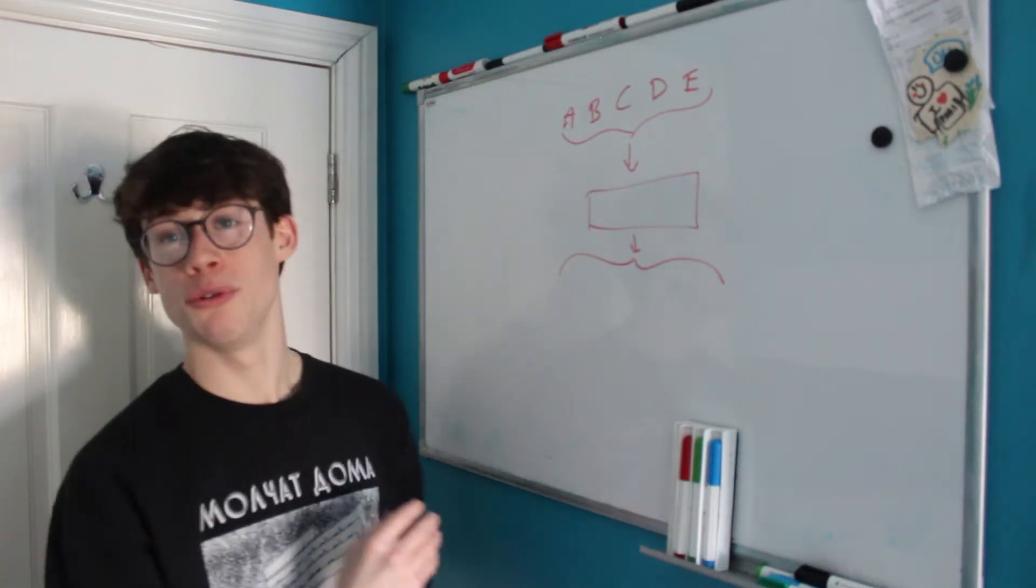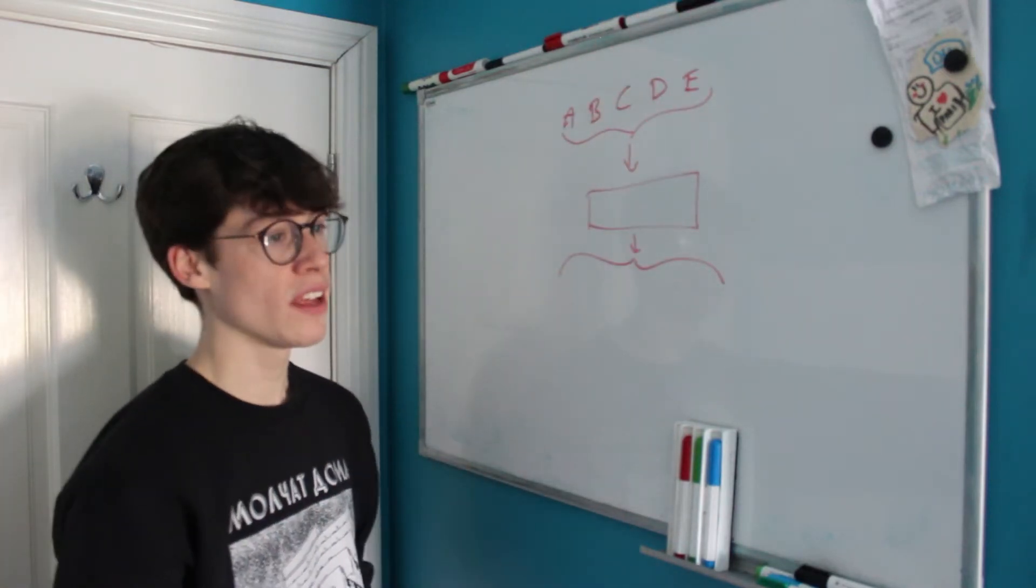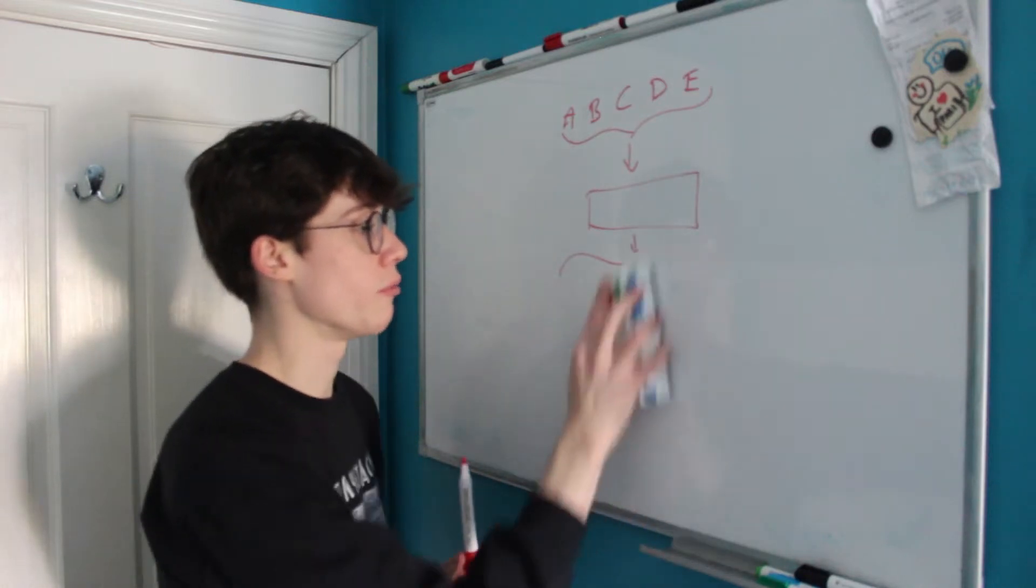And this is actually called the derangements of A, B, C, D and E where n equals 5 in our case and so that's where our probability is going to come from.